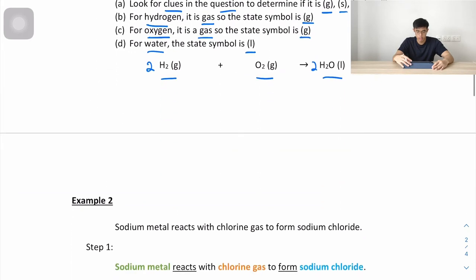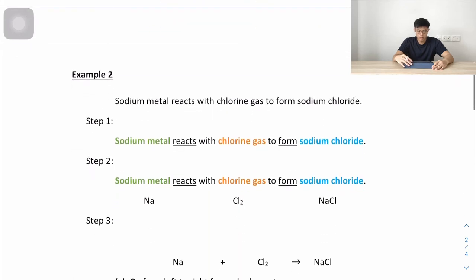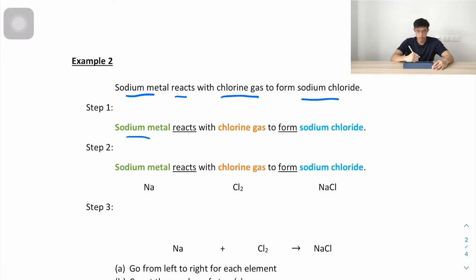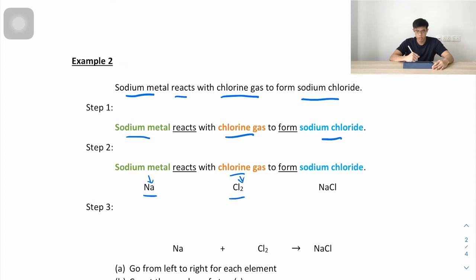Example 2: sodium metal reacts with chlorine gas to form sodium chloride. The reactants are sodium metal and chlorine gas, and the product is sodium chloride. Step 2: sodium metal is Na, chlorine gas is Cl₂, and sodium chloride is NaCl.